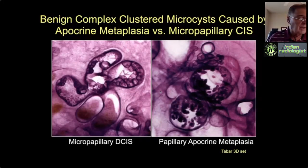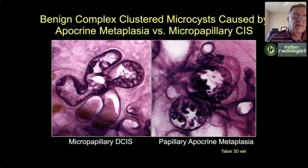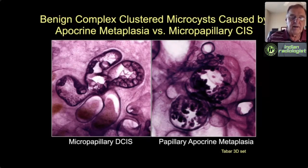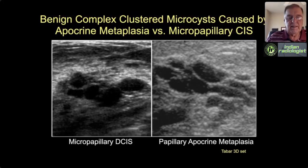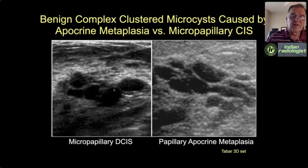Simple clustered microcysts are BI-RADS 2—benign, part of the fibrocystic spectrum, caused by apocrine metaplasia. When we have complex cystic and solid microcysts, we have a differential of micropapillary DCIS versus papillary apocrine metaplasia. These are beautiful Laszlo pictures of micropapillary apocrine metaplasia on the left and apocrine metaplasia on the right—video inverted they look very similar, and the ultrasound pictures also look very similar. So complex clustered microcysts can be a diagnostic problem. We can take comfort that more than 99 out of 100 are going to be apocrine metaplasia; less than 1 out of 100 will be micropapillary DCIS.